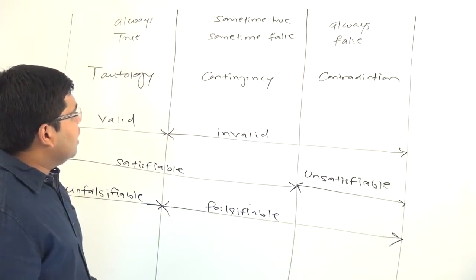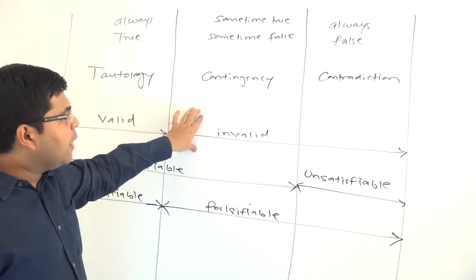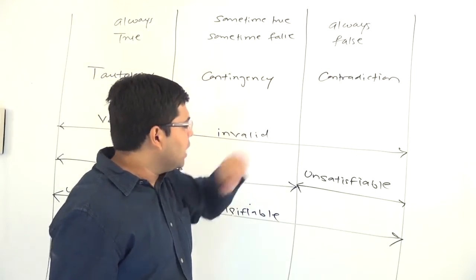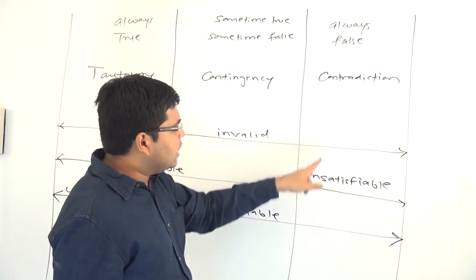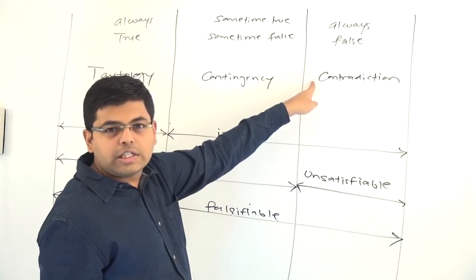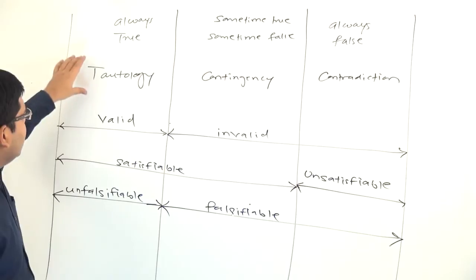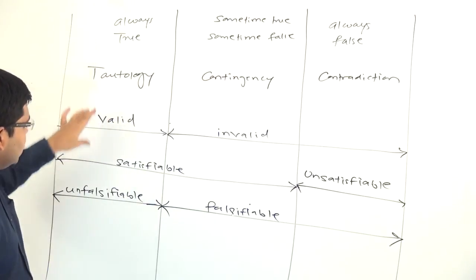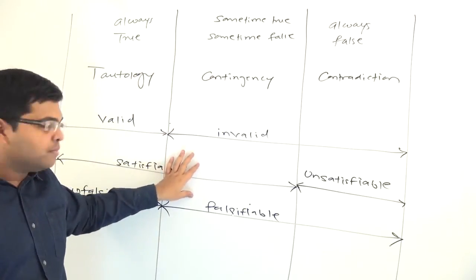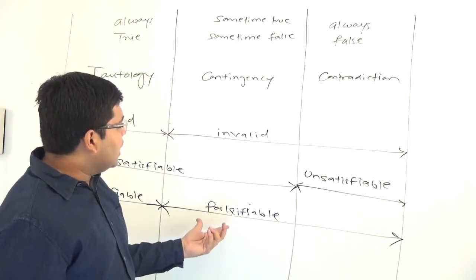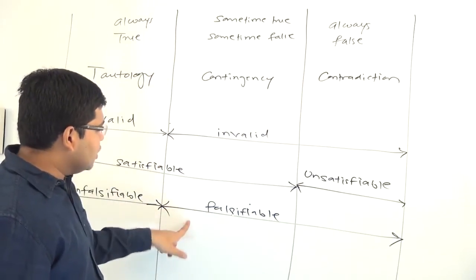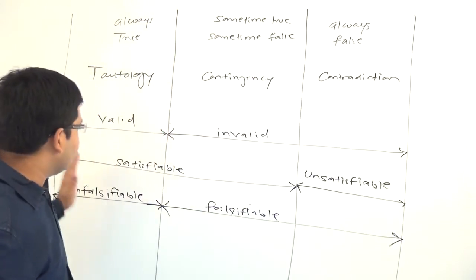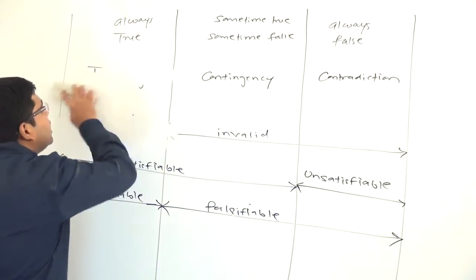Every contingency is invalid, every contradiction is invalid, and an invalid formula may be a contingency or a contradiction. Every contradiction is unsatisfiable, and every unsatisfiable formula is a contradiction. A satisfiable formula will be either a tautology or a contingency. A contradiction is always falsifiable. You need to remember these relationships categorically. I hope you are clear with this particular diagram, and now we can make certain concluding statements.